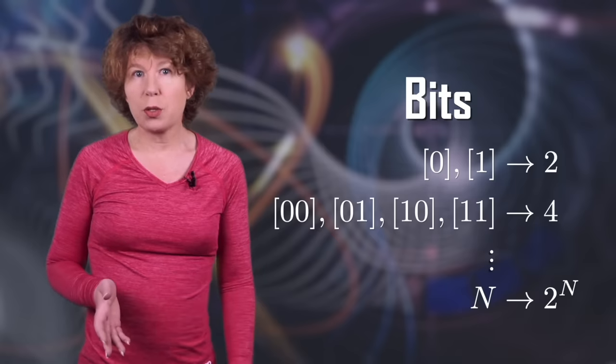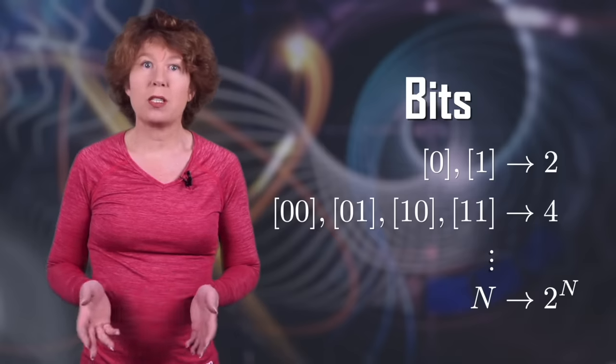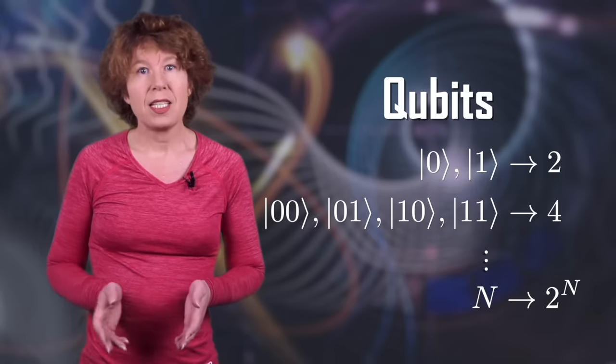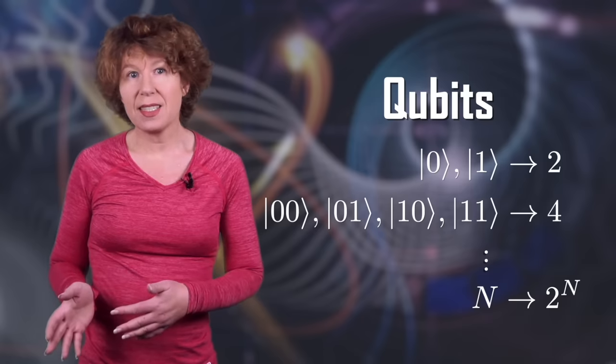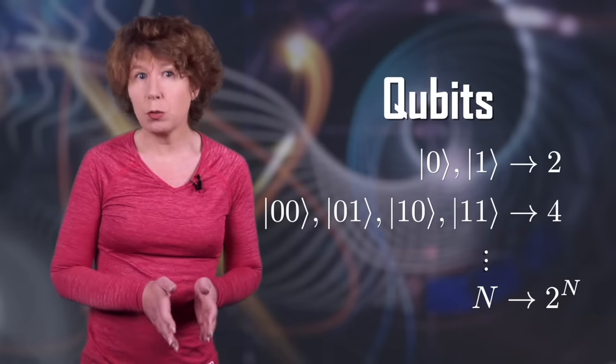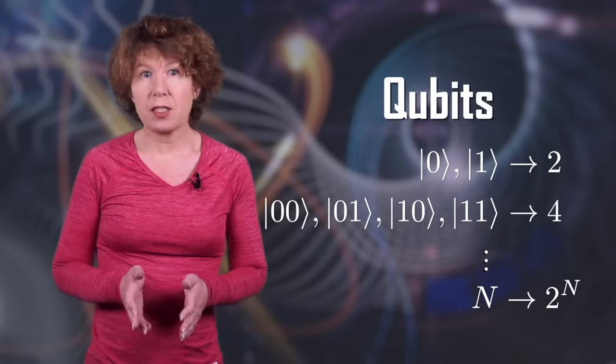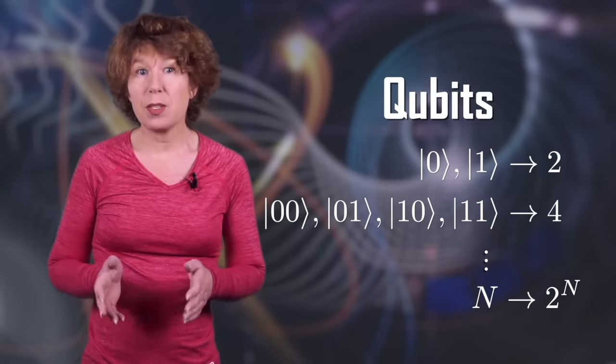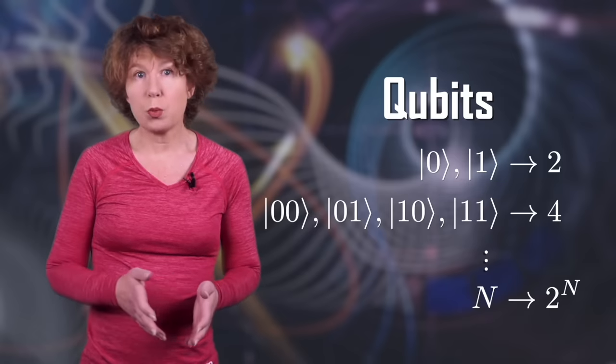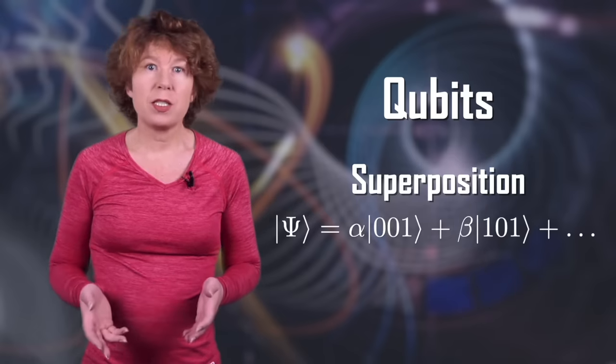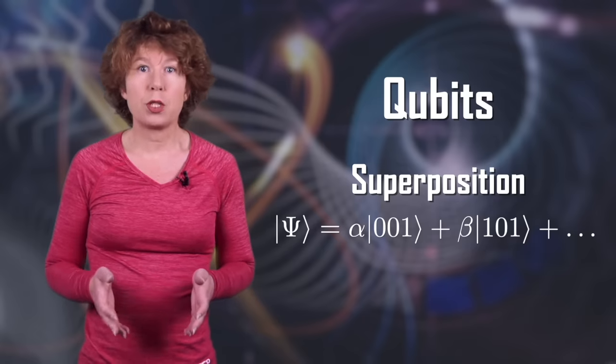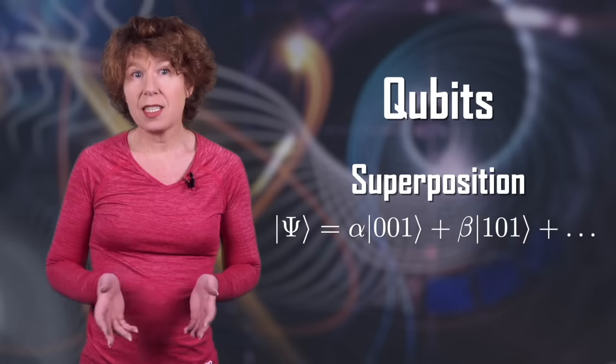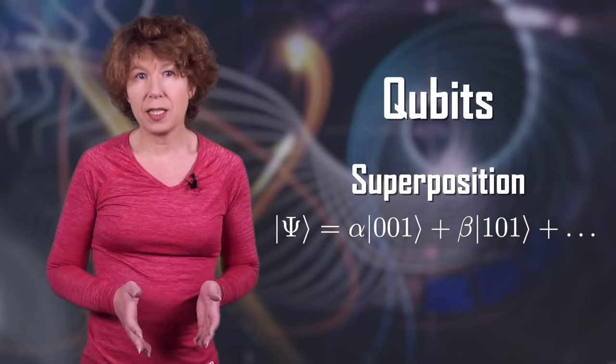For the qubits of a quantum computer, we put the zero and one into weird looking brackets. It's not just to make them look more mysterious. It's because if we use the laws of quantum mechanics, then we can do a new thing with them. If we have n qubits, there are still 2 to the n combinations of them. But we can do something else with them. We can bring them into superpositions. This means we can add them with arbitrary factors, which are complex numbers.